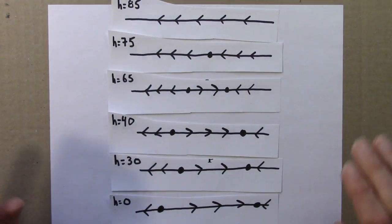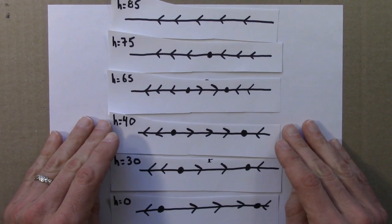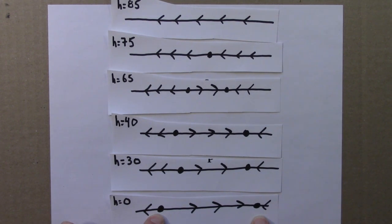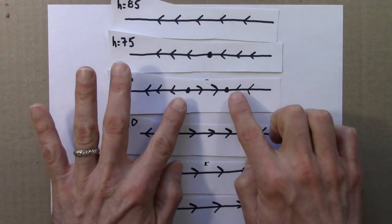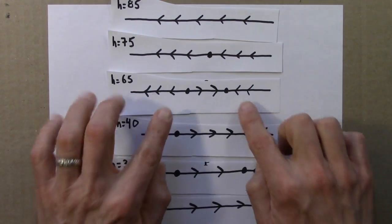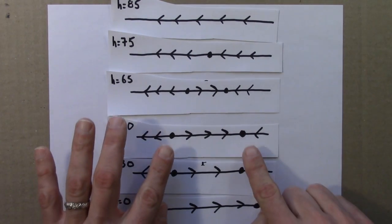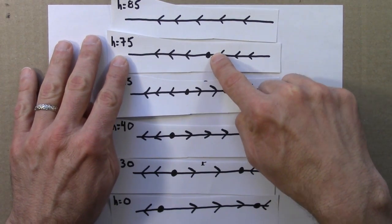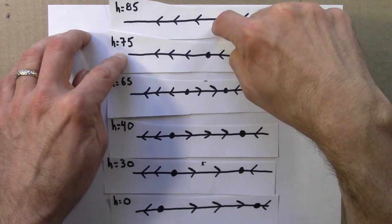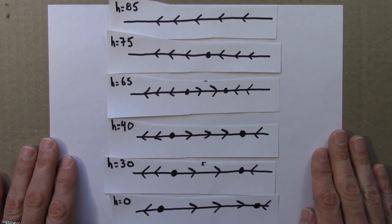So there they are in order. This was the original logistic equation without any harvest at all. And then as we start harvesting more, the fixed points move in. The two fixed points are getting closer together. They're just sketches, but the idea is you can see them kind of moving together. Here there's just one, and by the time we get to here there's no phase line at all.